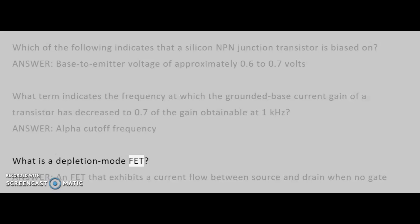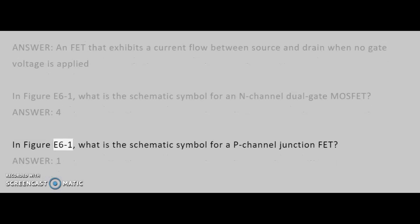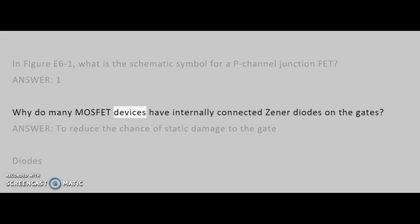What is a depletion mode FET? Answer: an FET that exhibits a current flow between source and drain when no gate voltage is applied. In figure E6-1, what is the schematic symbol for an N-channel dual-gate MOSFET? Answer: 4. In figure E6-1, what is the schematic symbol for a P-channel junction FET? Answer: 1. Why do many MOSFET devices have internally connected Zener diodes on the gates? Answer: To reduce the chance of static damage to the gate.